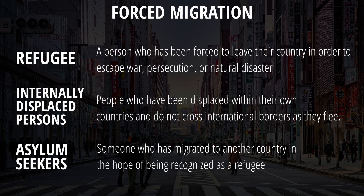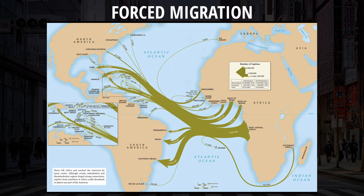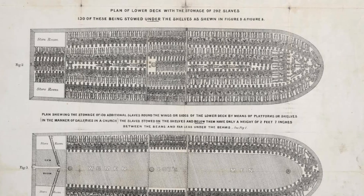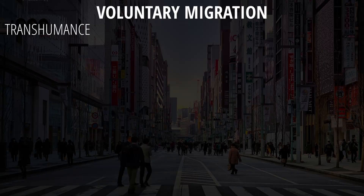An internally displaced person does not cross international borders. Rather, they stay within their country and can be displaced due to violence. In Syria, there are around 6.2 million IDPs due to the civil war occurring within the country and the various groups fighting for control. Another form of forced migration would be slavery, and the best example is the transatlantic slave trade, where over 10 million enslaved Africans were forced to the Americas between the 16th and 19th century.